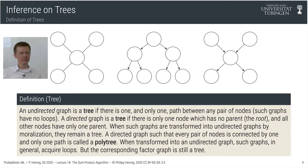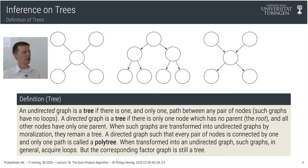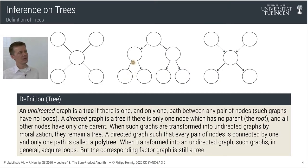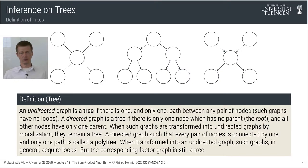For directed graphs, a directed tree has only one node with no parent—called the root—and all other nodes have exactly one parent. A nice property is that if we turn such a graph into an undirected graph by dropping all the arrows, it remains a tree. This is because every node has only one parent, so we don't need to moralize by connecting parent nodes.